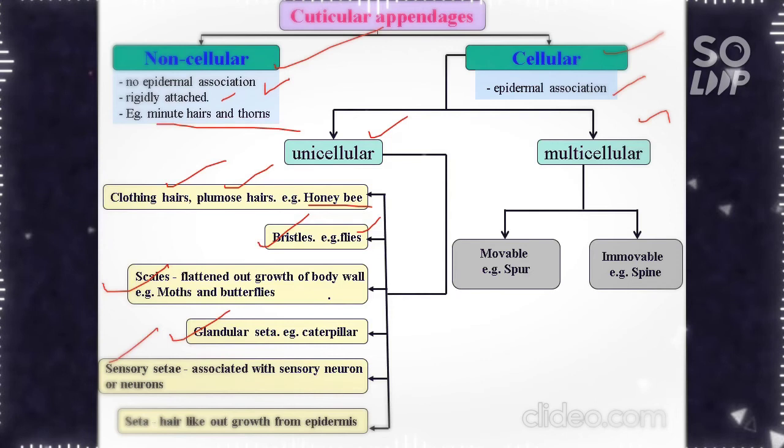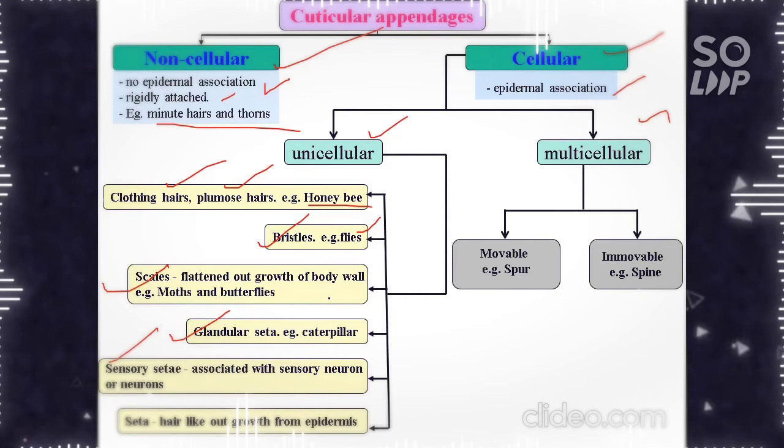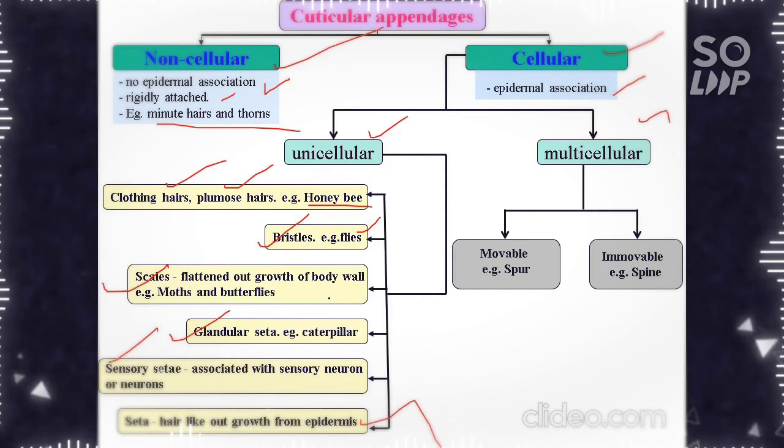Sensory setae are associated with sensory neurons. Generally, setae are hair-like outgrowths of the epidermis. The multicellular appendages include movable multicellular appendage called spur and immovable cellular appendage called spine.